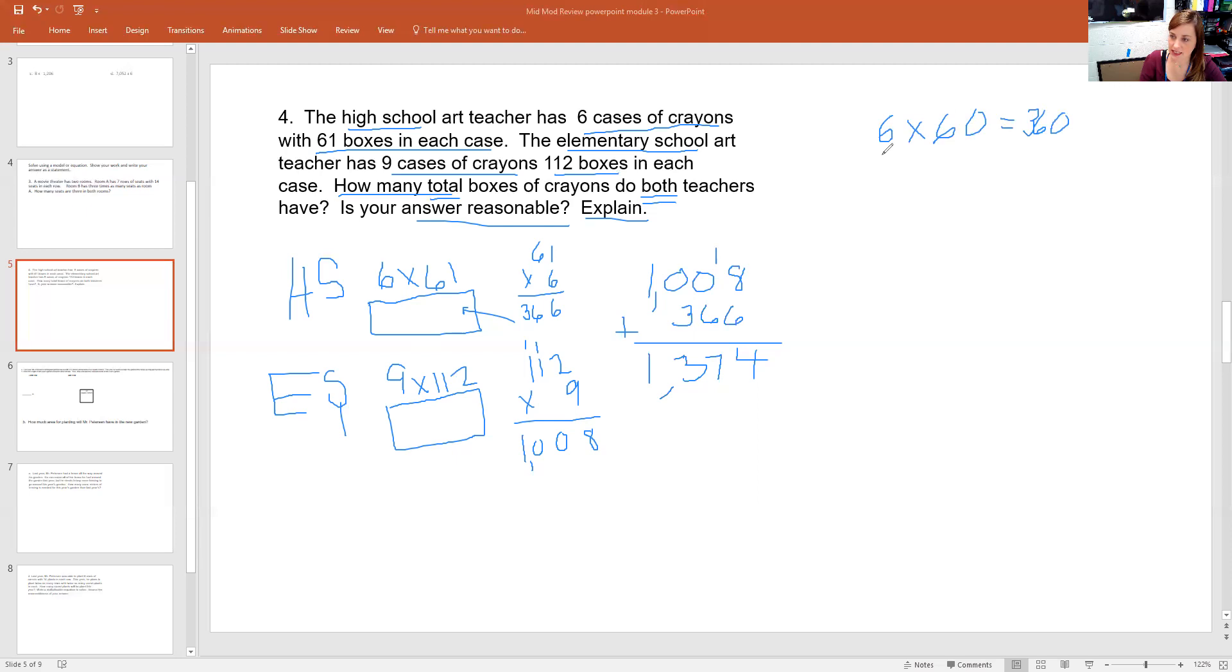And then I'll say nine times 110 is pretty close to 112. We're just making an estimate. So nine times 11 is 99. I'm adding a zero. And I could add those up. Nine, five. Okay, so then is it reasonable? Yeah, it's pretty close to this one.